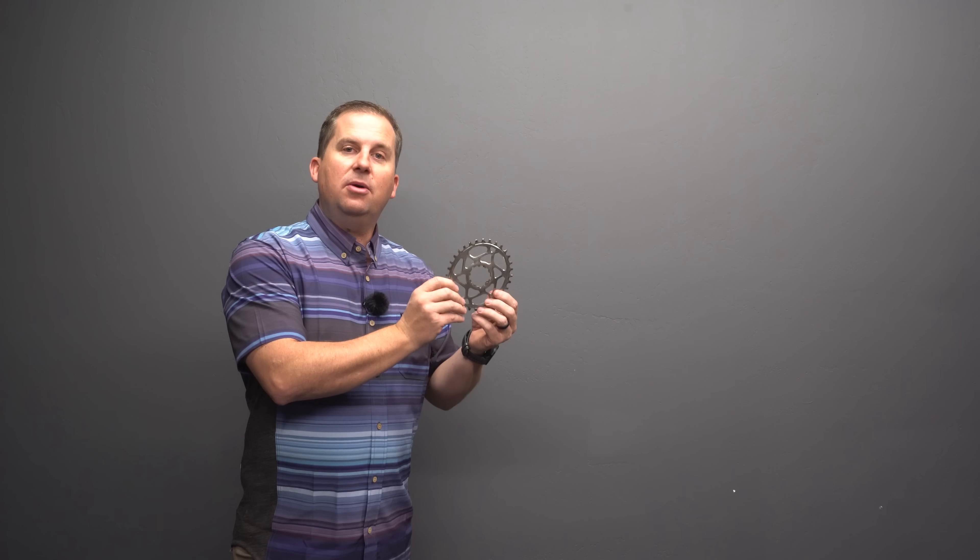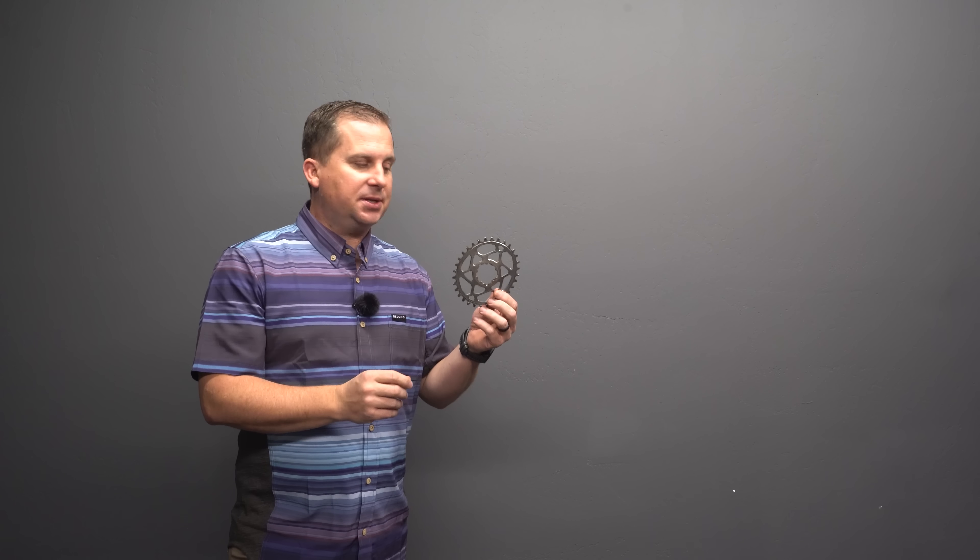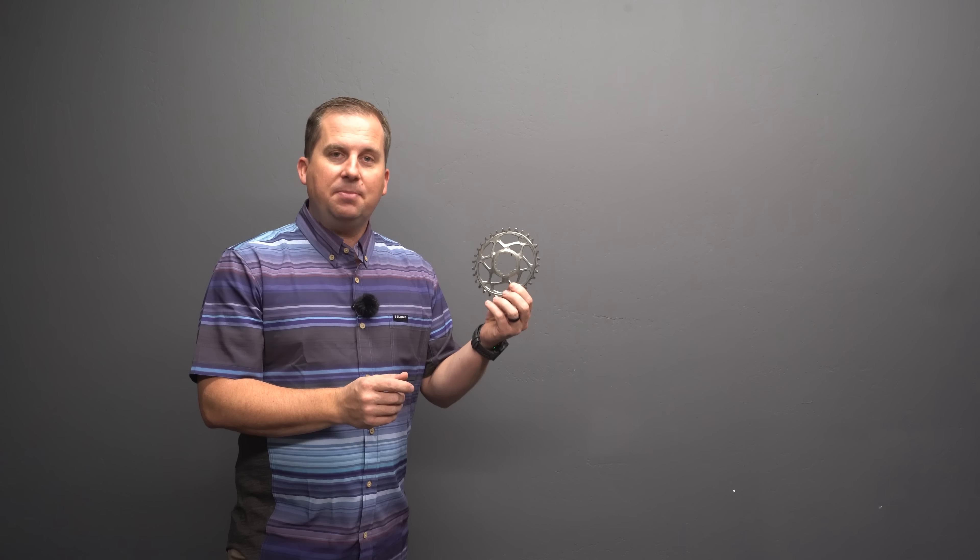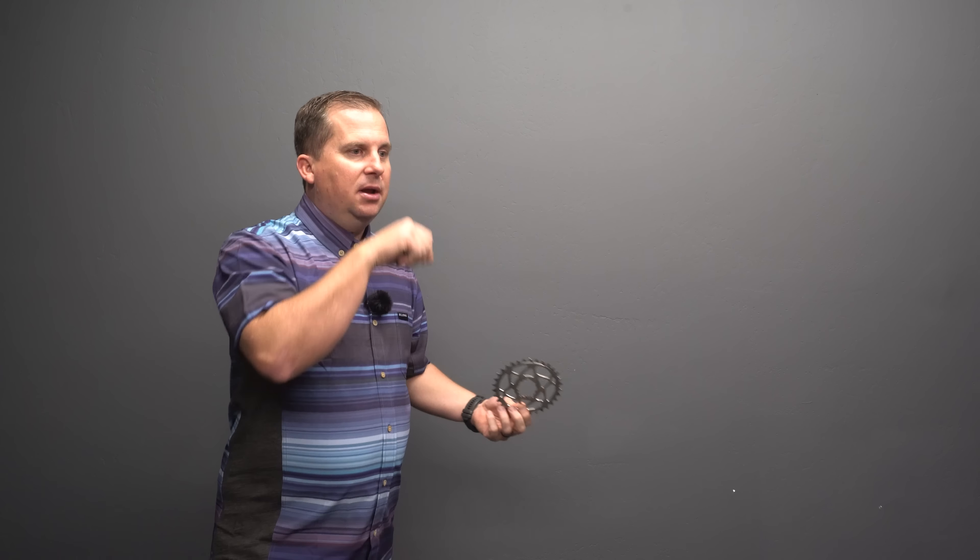My favorite chain ring is an absolute black oval chain ring. No issues with them. I've got thousands of miles on these. Some people can really feel the difference with ovals and some people can't. I really like them. I feel like it smooths out my cadence. I do a lot of chopping wood.